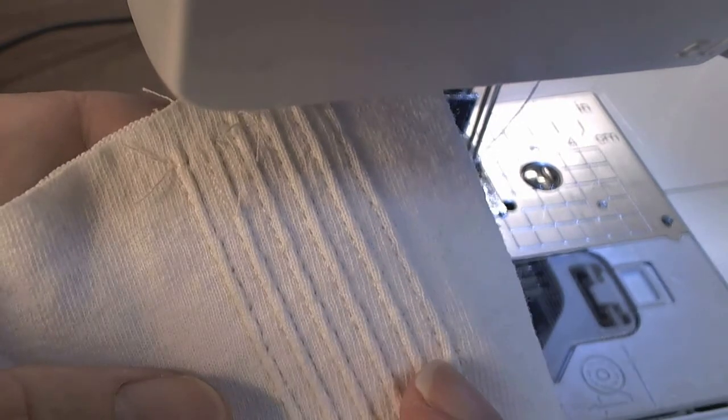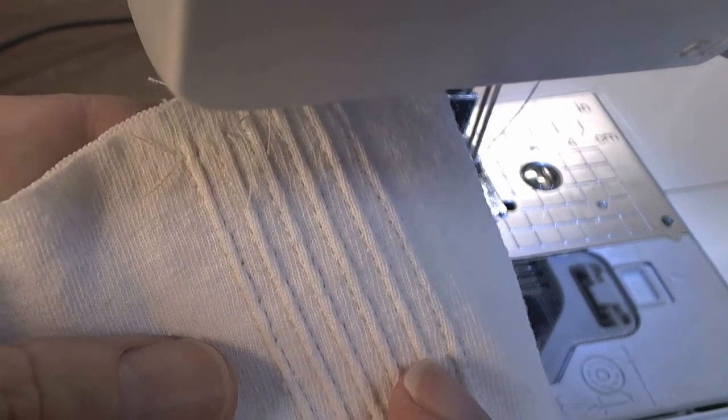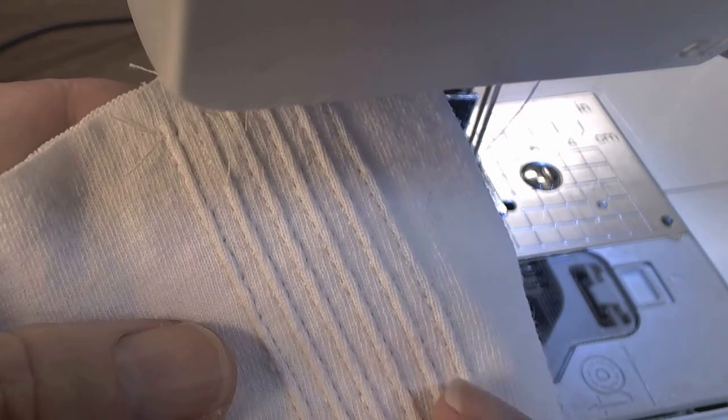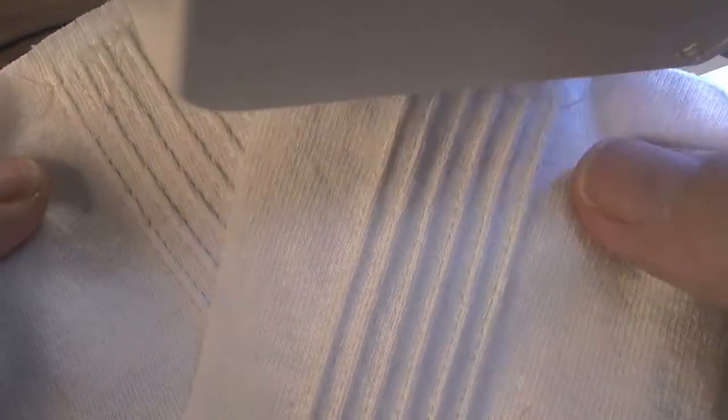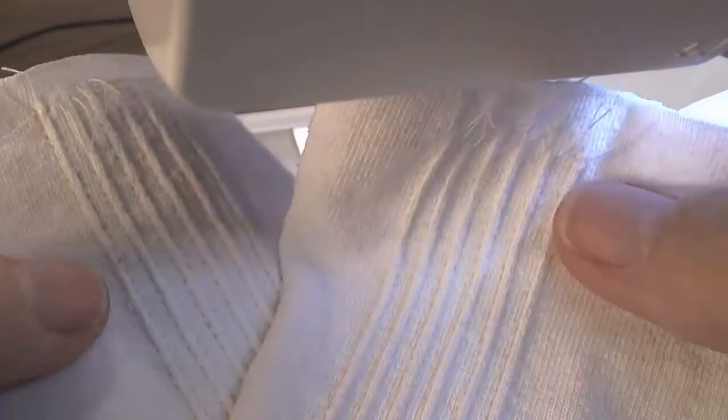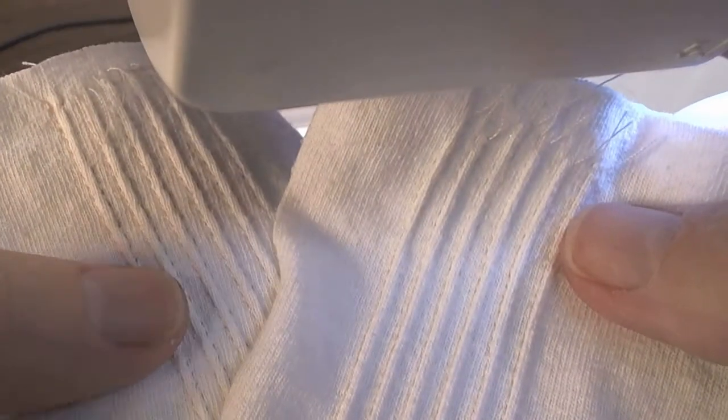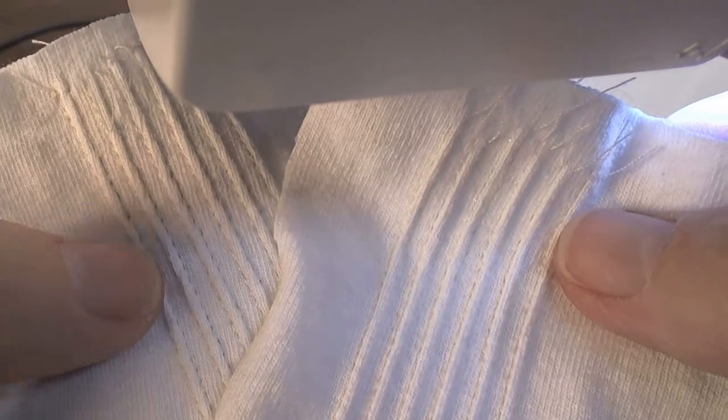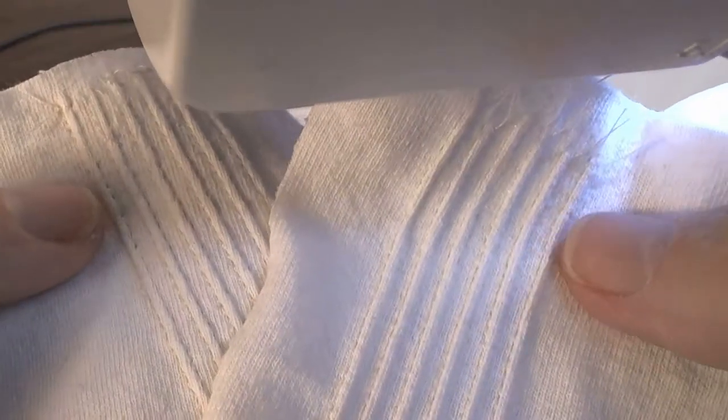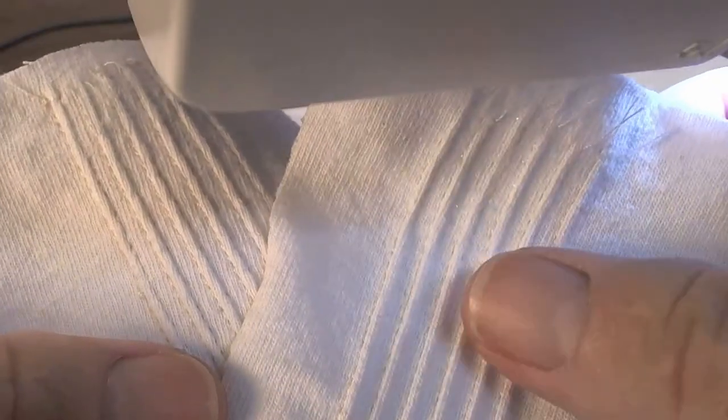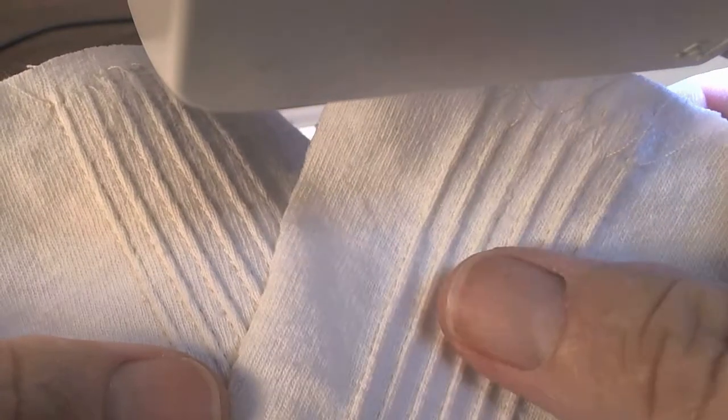This is two layers with a two millimeter twin needle. This is pin tucking the exact same settings on one layer of fabric. With two layers you get not as much of a defined ridge, but with one layer you get a more prominent ridge.